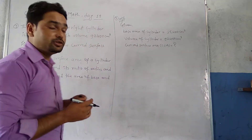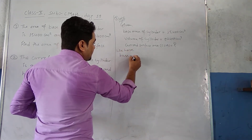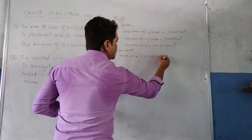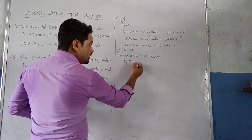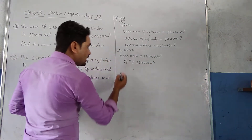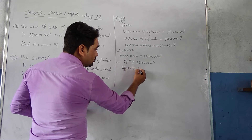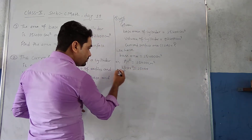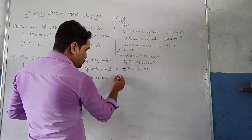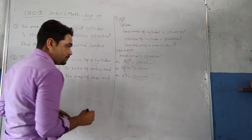We have base area = 15400 cm². We know the formula: π r² = 15400. Substituting π = 22/7: 22/7 × r² = 15400. Rearranging, r² = 15400 × 7/22.